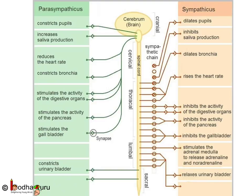The nerves in the autonomic nervous system are divided into two categories based on where they originate from — that is, sympathetic and parasympathetic. There are various functions performed by the different nerves in the autonomic nervous system, which controls the vital functions in our body.